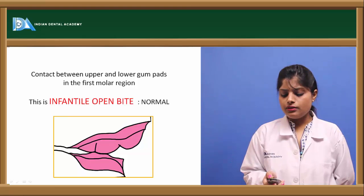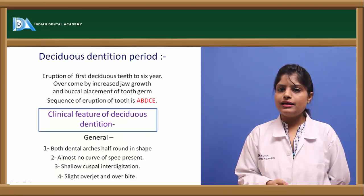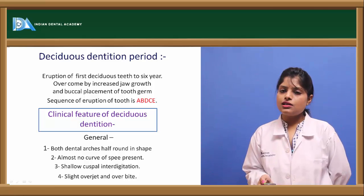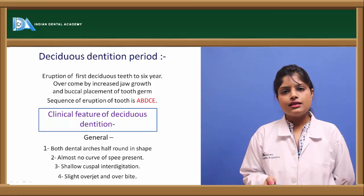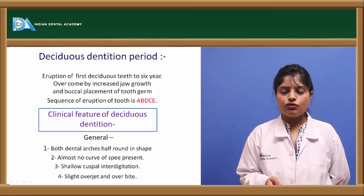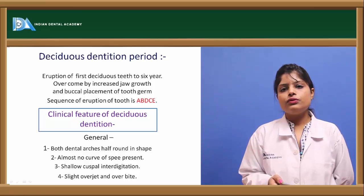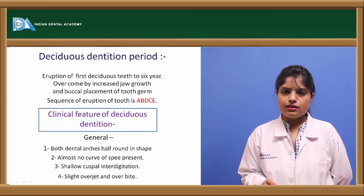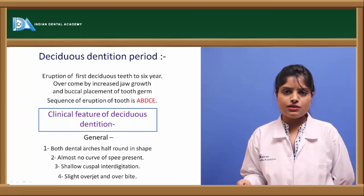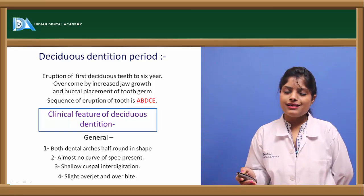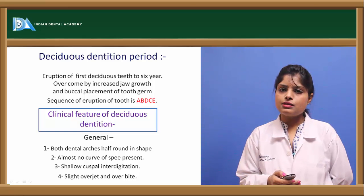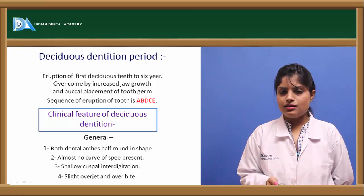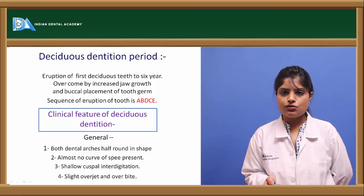The deciduous dentition period starts from the eruption of the first teeth in the oral cavity until 6 years of age. The sequence of eruption in this stage is A, B, D, C, E. Clinically, the curve of Spee is absent at this stage — this curve is formed by the incisal edges of the anteriors toward the cuspal tips of the posteriors, leading to the condyle of the mandible. There is slight overjet or overbite present and hardly any cuspal interdigitation.